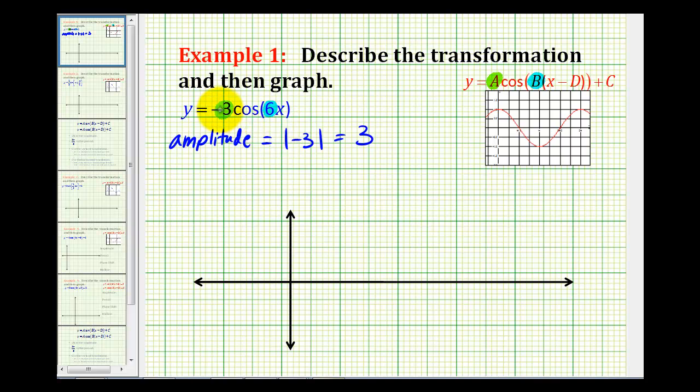But because a was negative, that means it will be a reflection across the midline, or in this case, across the x-axis.